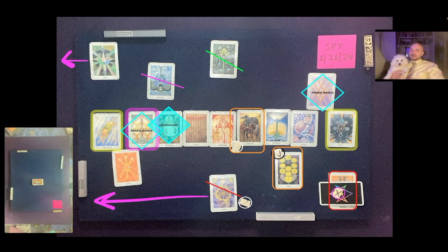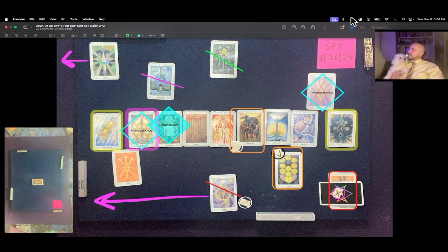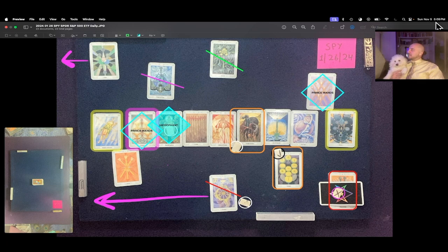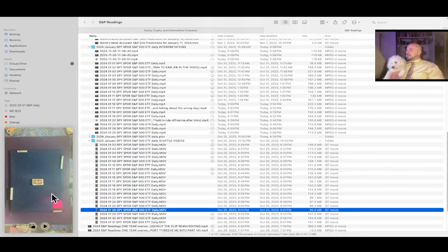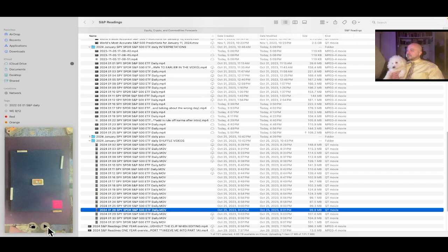This is the S&P 500 Spider ETF SPY one-day reading for January 26, 2024. It's currently November 5, 2023, 5:09 PM Eastern Time. SPY at the time of this reading is $434.69 USD. The shuffle video in the corner was created on October 25, 2023 at 9:01 PM Eastern Time.